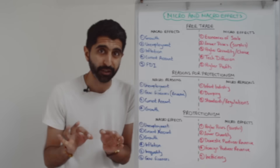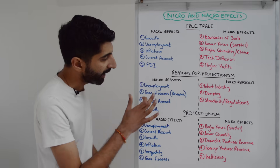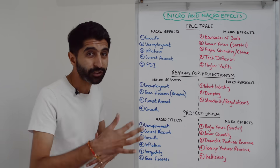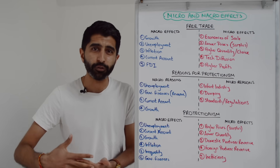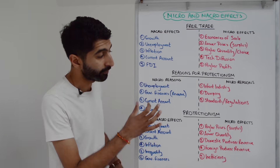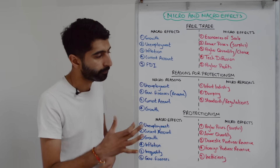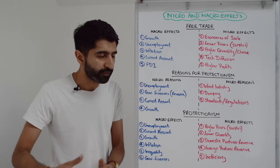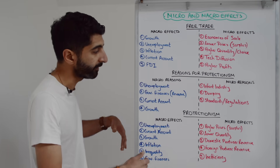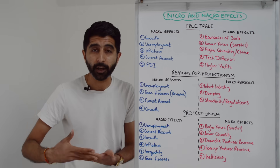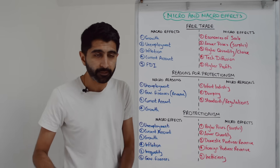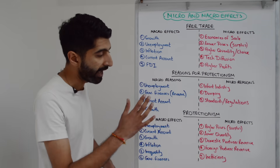Let's move on to reasons for protectionism. Macro reasons are very clear. To protect against unemployment is very much a macro reason. To raise revenue for developing countries is quite a big deal — a major source of tax revenue is actually tariff revenue, specifically coming from tariffs if they're imposed. We can link that overall to the state of government finances improving. Even for developed countries, if tariffs are placed on a wide variety of goods, it can be quite a substantial benefit.